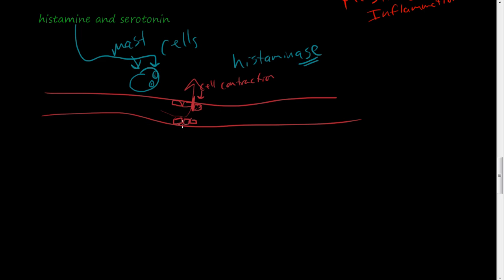These are the reasons why histamine is released from mast cells. So physical injuries, such as trauma or heat. If there's a physical injury to this tissue here, then these mast cells are going to spit out or release this histamine. It's prepackaged here.